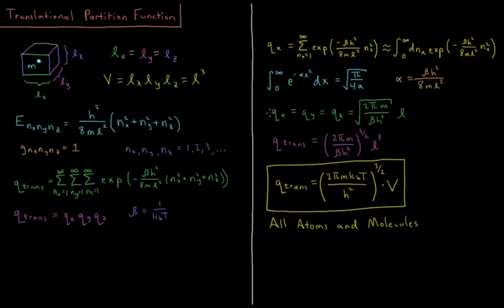In this case, qx, which is the same as qy and qz since we've set these l's equal to one another, each individual dimension has a partition function of 2 pi m over beta h squared times l. So the translational partition function is going to be the product of those three, which is equal to 2 pi m over beta h squared to the 3 halves times l cubed. We defined l cubed in the beginning to be the volume of the box, so we can make that v.